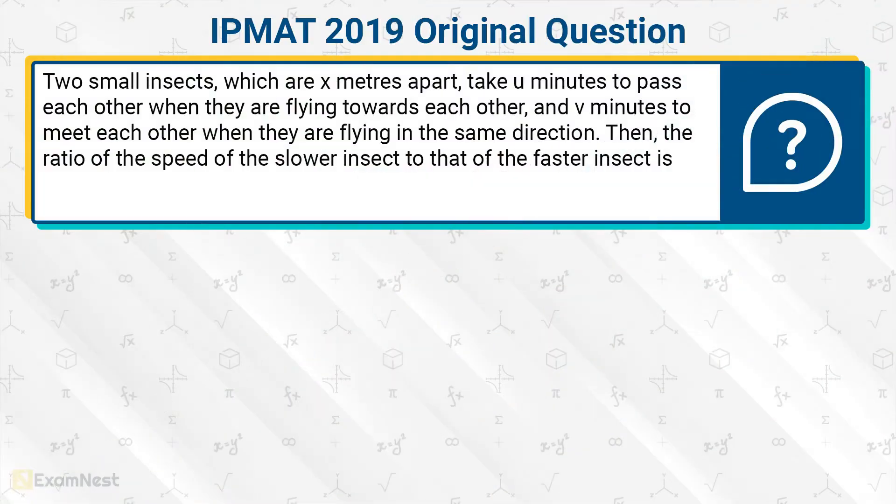This question has been asked in the IPMAT Indore Integrated Program in Management Aptitude Test. Two small insects which are x meters apart take u minutes to pass each other when they are flying towards each other and v minutes to pass each other when they are flying in the same direction. Then the ratio of the speed of the slower insect to that of the faster insect is...